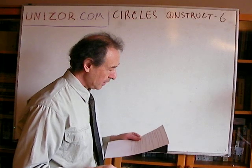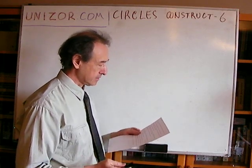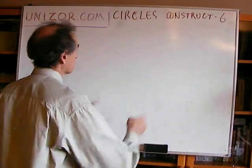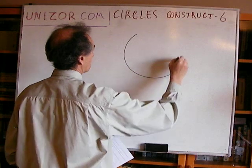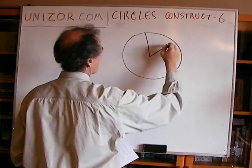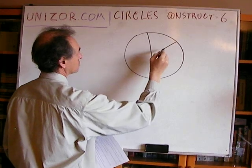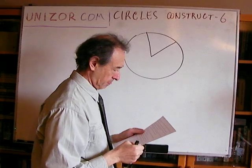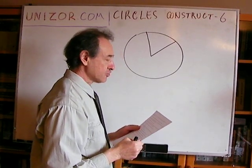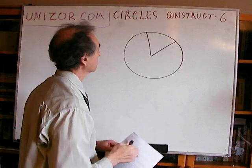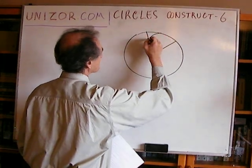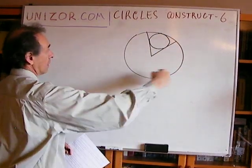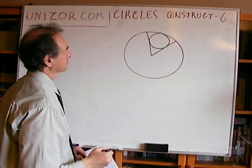Right, let's go. Given a circle and a sector in it, bordered by two radiuses and an arc. Inscribe a circle into this sector, tangential to both radiuses and an arc. So you have to build a circle which is tangent to these two and to an arc, which is basically to a circle itself.